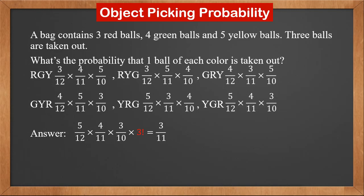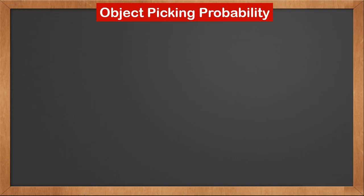However, if we use the combination approach, it becomes a lot easier. The total number of ways is 12C3. If one ball of each color is selected, it is 3C1 × 4C1 × 5C1. The answer is also three over eleven. So again, combination is recommended.